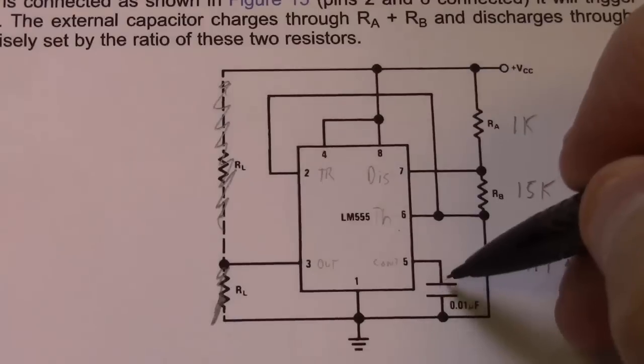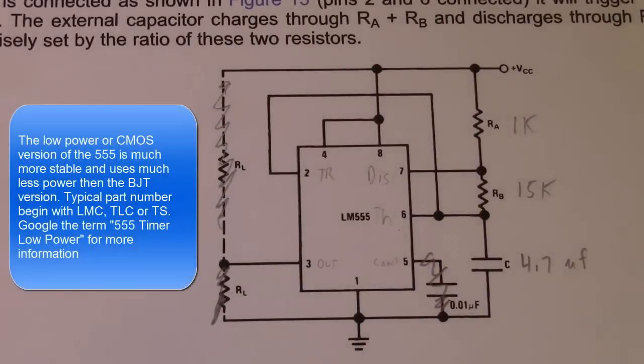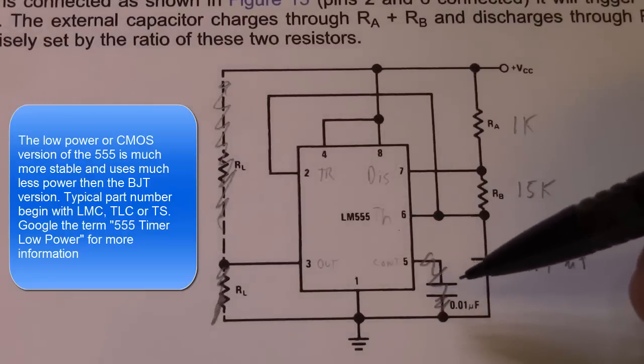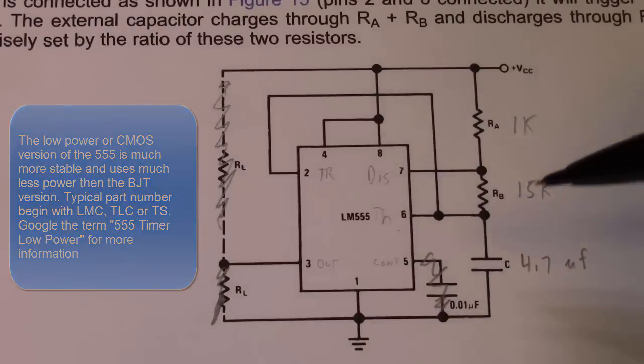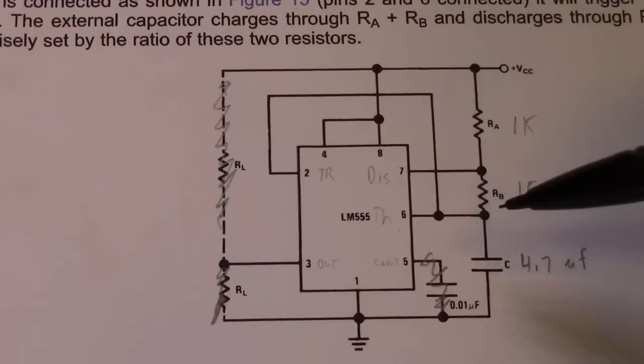This capacitor is not really necessary, particularly if you use a CMOS version of the 555 timer chip. There's a bipolar transistor version and a CMOS version. In most of my applications, I've never had to use this capacitor on the control. It's just to stabilize the voltage on pin five, but if your circuit works without it, don't include it.